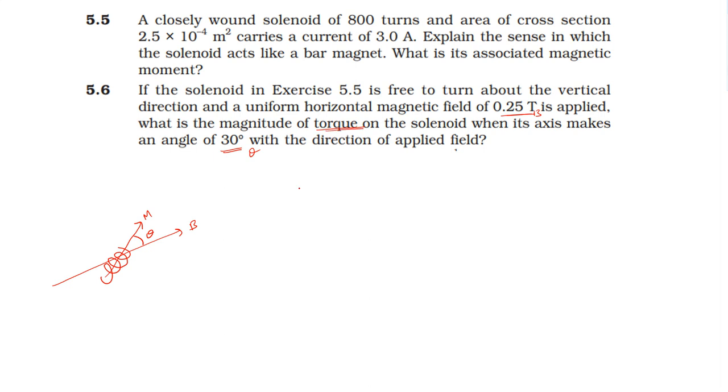The magnetic moment equals number of turns times current times area. The number of turns is 800, current is 3 amperes, area is 2.5 into 10 power minus 4. So 800 into 3 into 2.5 into 10 power minus 4 gives the magnetic moment of 0.6 joules per Tesla. This is the magnetic moment.